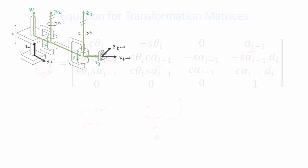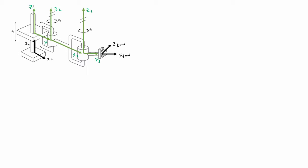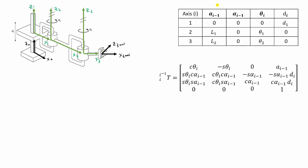Using this equation is best understood through an example. This is the robotic manipulator we've been looking at through these past three videos. In the first video we assigned the frames, and in the second video we found its DH table. Now we will use the values in the DH table to find its transformation matrices. We moved from frame 0 to 1, 1 to 2, and 2 to 3, and these are the exact same frames we will use to find our transformation matrices.